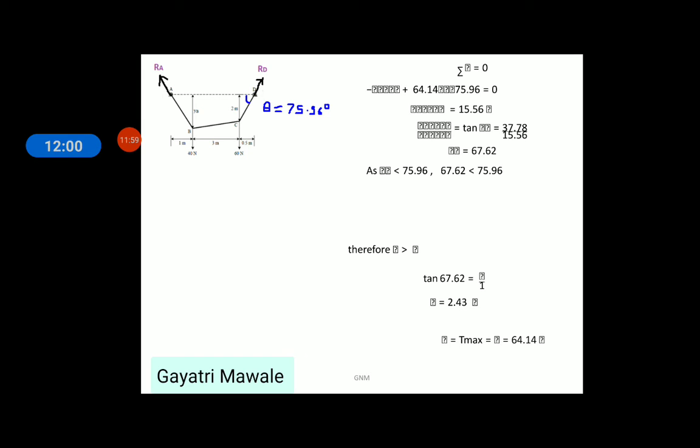So, now I have equation of RA sine theta and RA cos theta. Divide sine theta by cos theta, RA RA will get cancelled and we get tan theta is equals to 37.78 divided by 15.56. Take tan inverse of other side and you will get theta equals to 67.62 degrees. This is theta at A point.